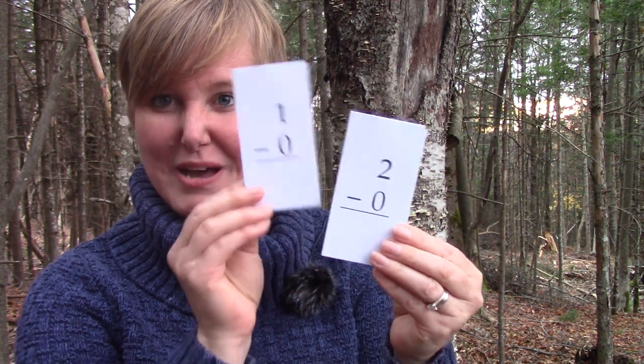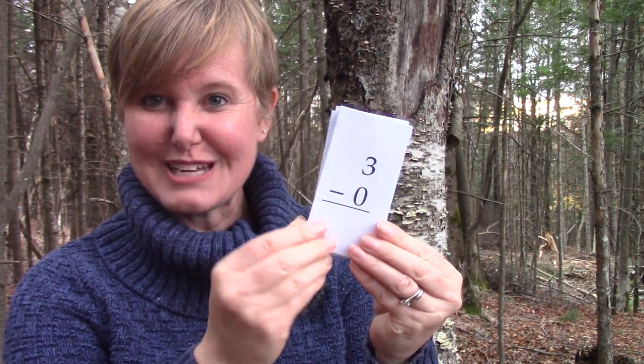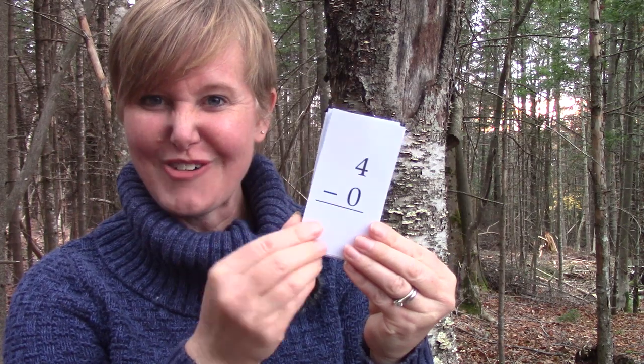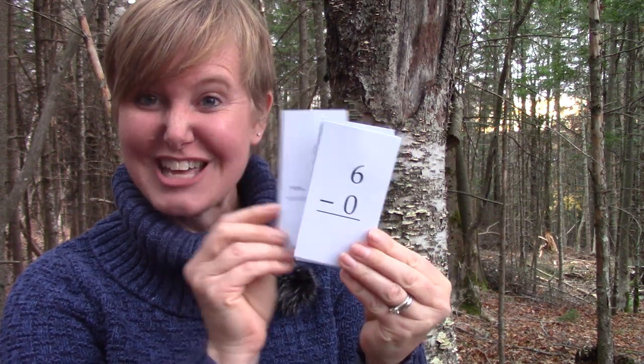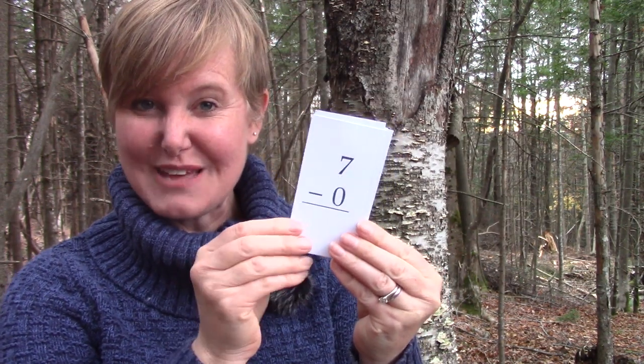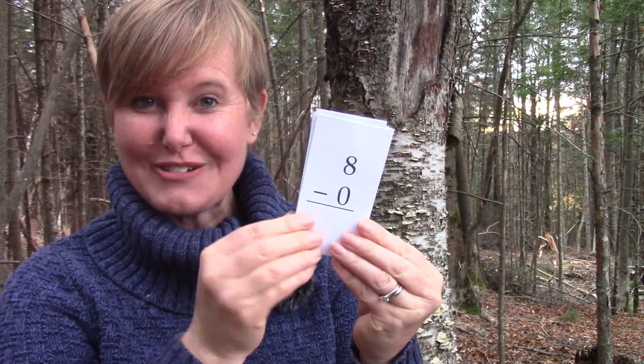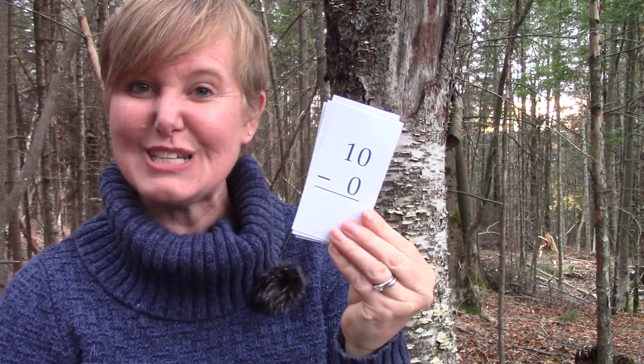One minus zero is one. Two minus zero is two. Three minus zero is three. Four minus zero is four. Five minus zero is five. Six minus zero is six. Seven minus zero is seven. Eight minus zero is eight. Nine minus zero is nine. And ten minus zero is ten.